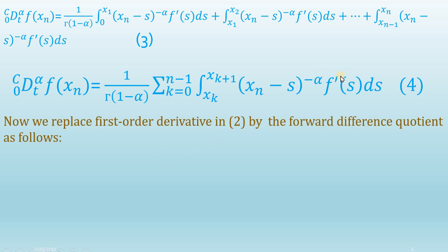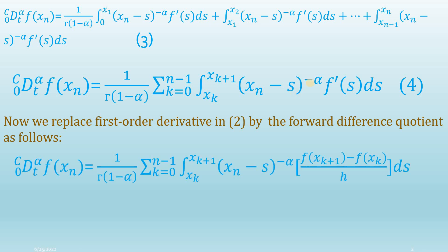In the integrand we have the first-order derivative of the function. I have replaced this first-order derivative by the forward difference quotient: f' is now written as the difference of two functional values divided by the step size h. This is what we call the first-order forward difference quotient from classical numerical analysis.